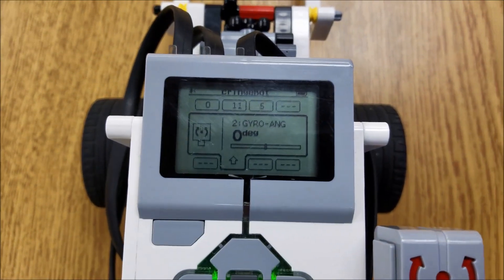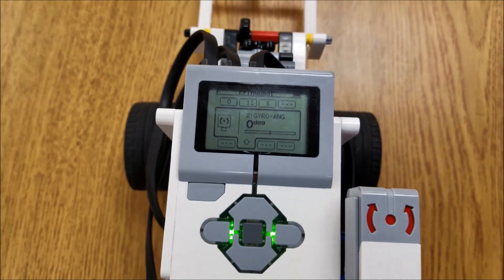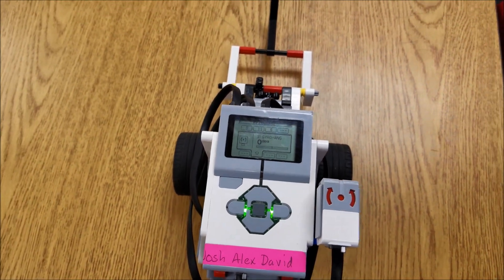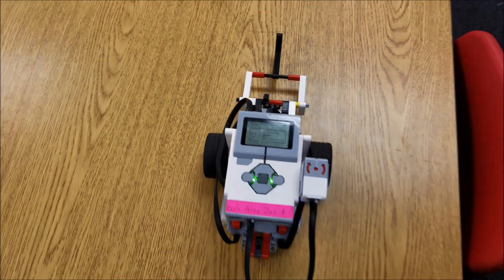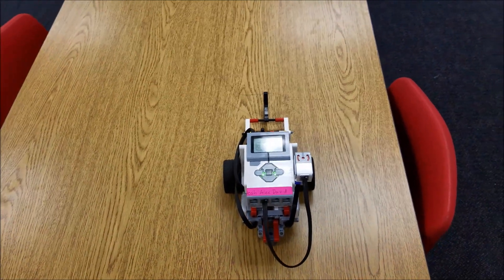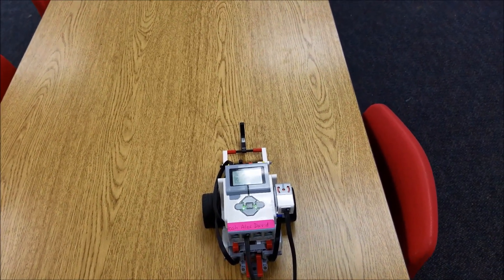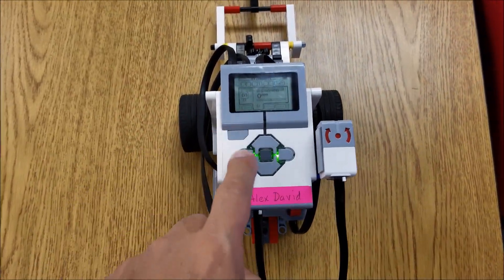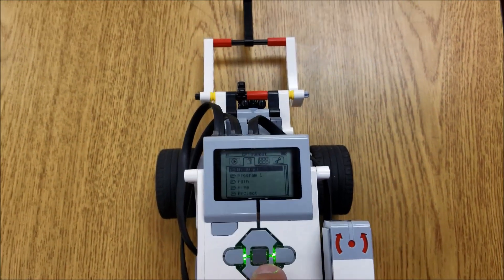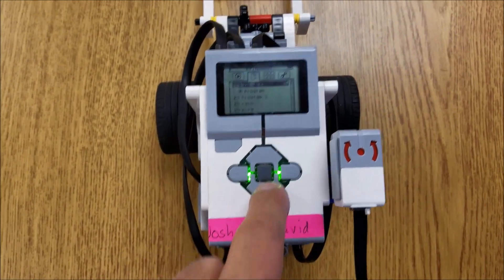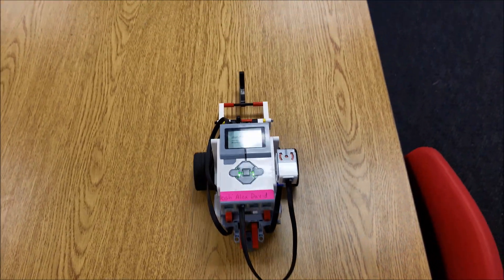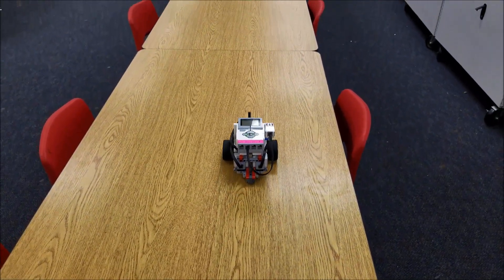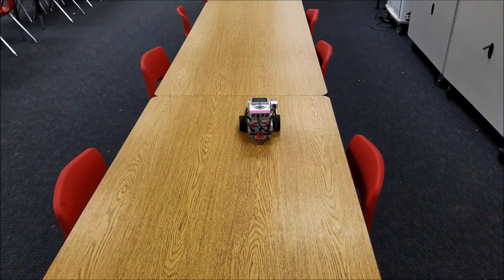So notice what happened is once I re-plugged that back in, now we're at zero degrees here, and that's going to obviously help with this gyro sensor now keep us going straight. So what we want to do now is just take a look at that same exact program. I actually called it My Block Program.